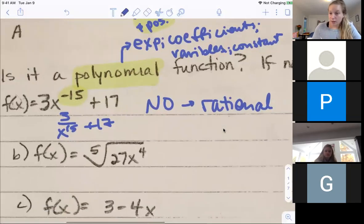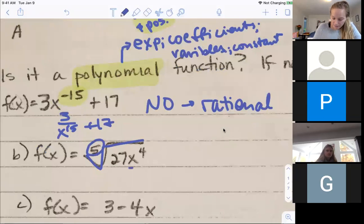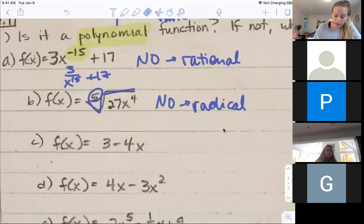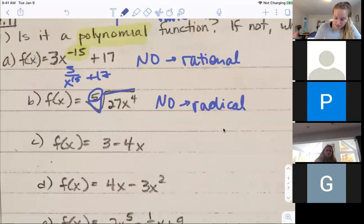The one underneath it is also not a polynomial function, but this time it's because it has a radical with an exponent out front. Technically, this is just a radical function. And again, we'll deal with that later in this unit too.